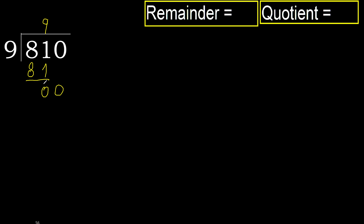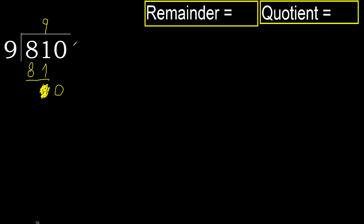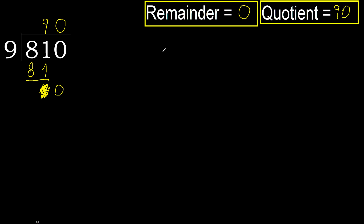Next, bring down 0 here. 0 is less, therefore next — that is not a number. Therefore finish it, complete with 0. Always complete with 0. 810 divided by 9 is 90.